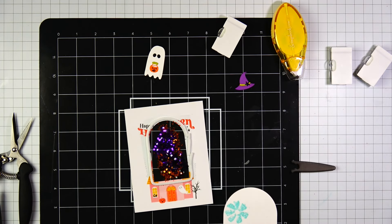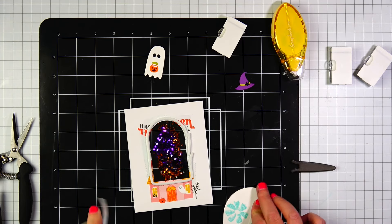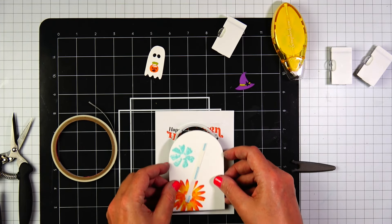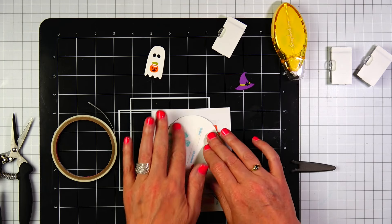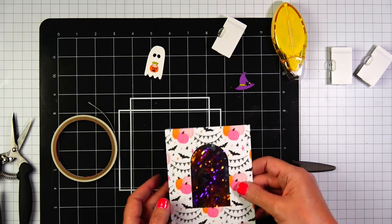Once I was happy with the amount, I'm going to close the back of this window with the black arch. And that's going to finish the shaker element of this card.